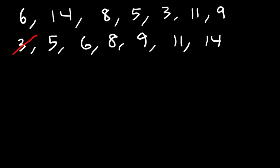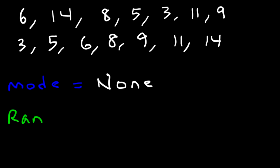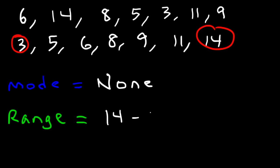Now what about the mode? Which number occurs most frequently? Notice that every number occurs only once, so therefore there is no mode in this particular problem. Now the last thing is the range, which is the difference between the highest and lowest number. The highest number is 14 and the lowest is 3. So 14 minus 3 is equal to 11, and so that's the range.